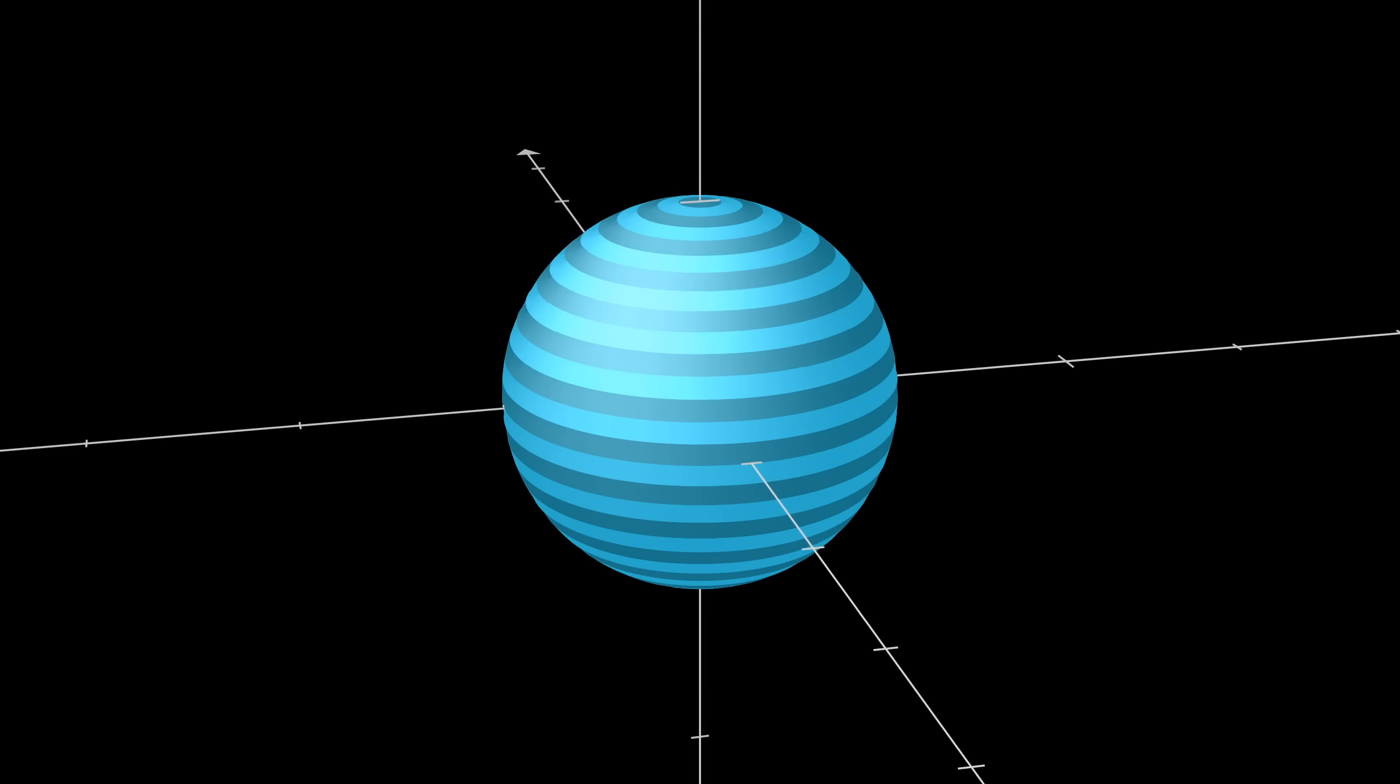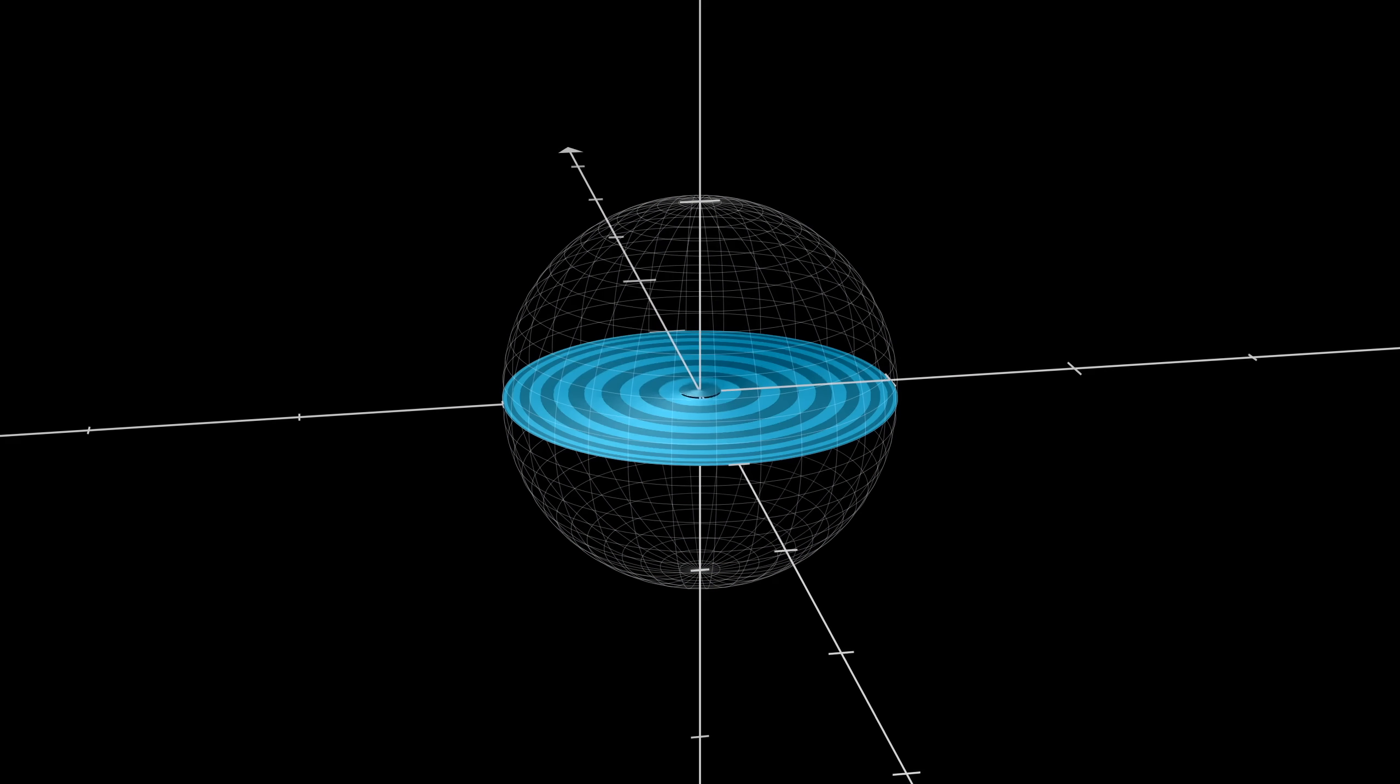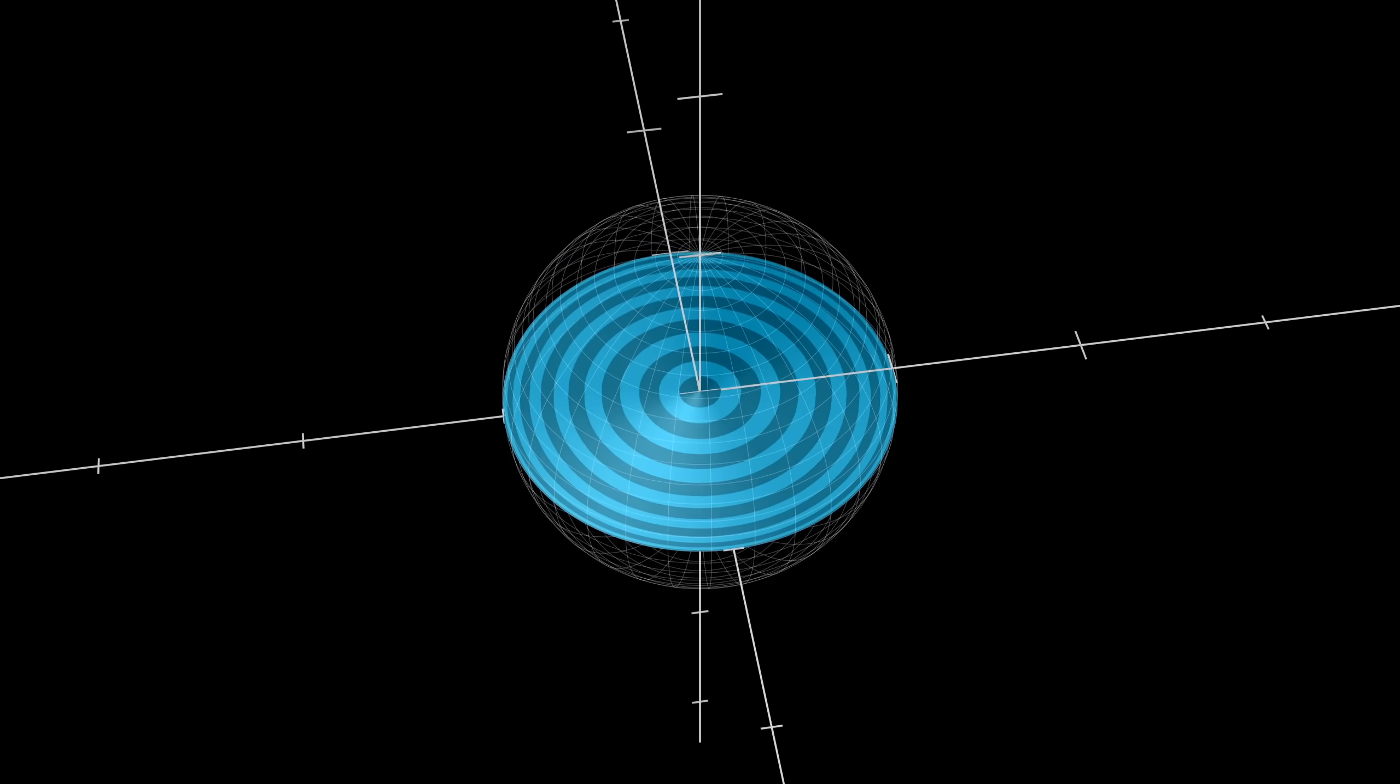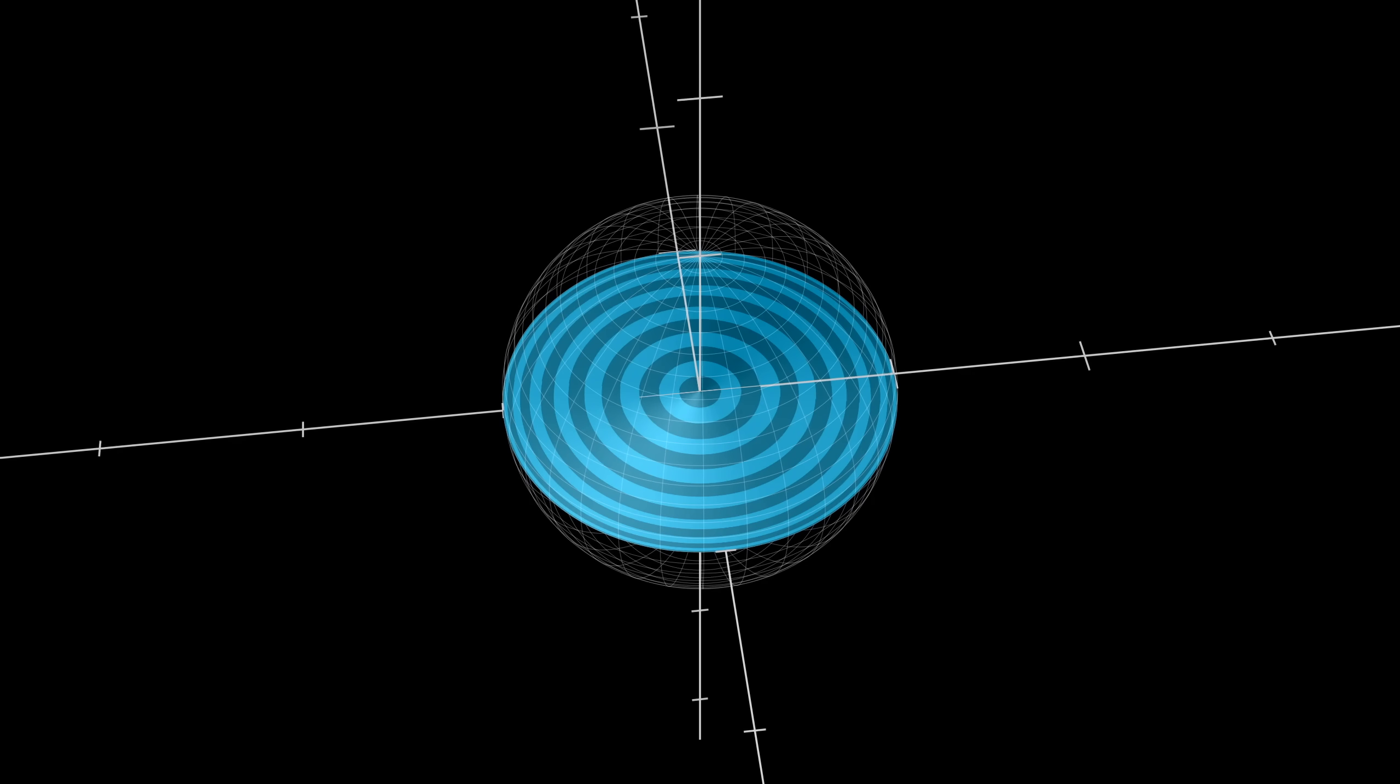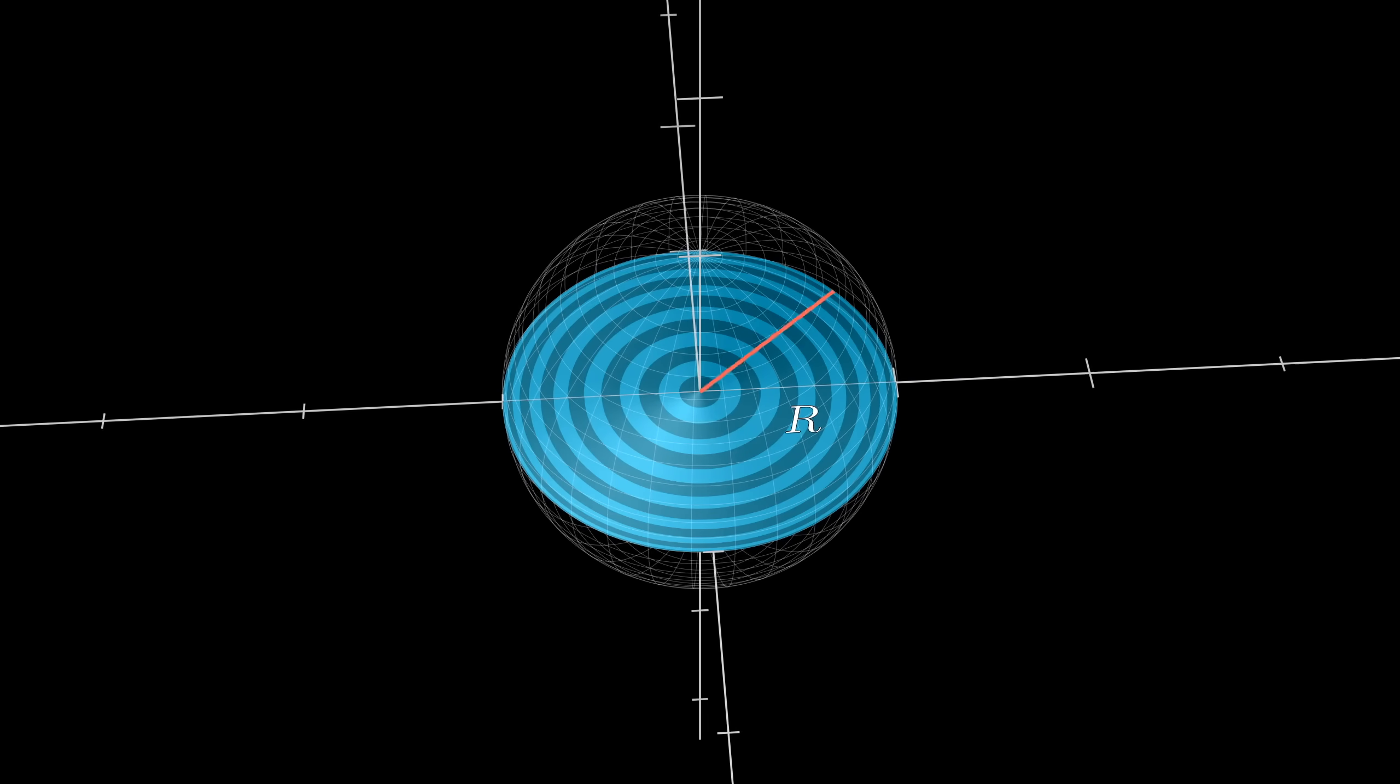And to compare the area of these rings to the area of their shadows on the xy plane. All of the shadows of the rings from, say, the northern hemisphere make up a circle with the same radius as the sphere, right?